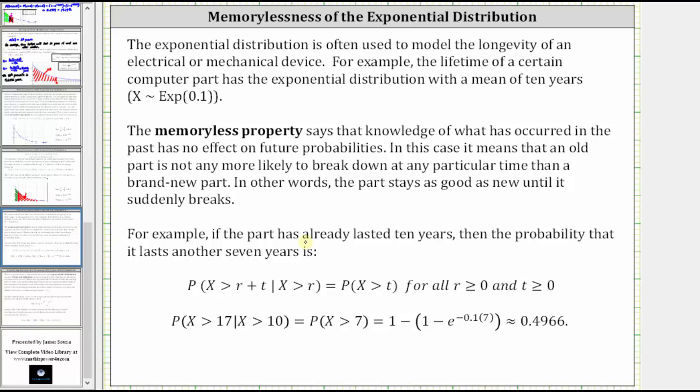For example, if the part has already lasted 10 years, then the probability that it lasts another seven years is, using the formula shown here, where r is equal to 10 and t is equal to seven, we have the probability that X is greater than 17, given X is greater than 10, is simply equal to the probability that X is greater than seven.